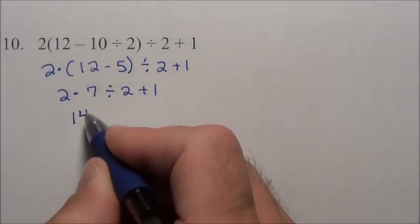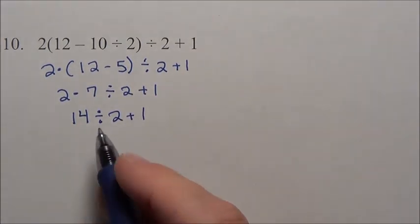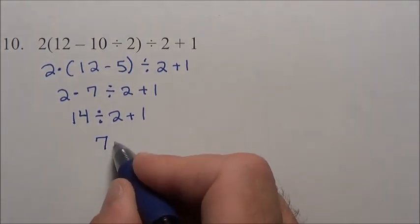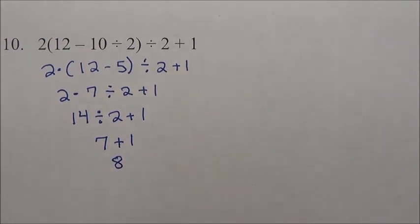2 times 7, 14 divided by 2 plus 1. Now we do the division. 14 divided by 2 is 7. Plus the 1 gives us a final answer of 8 for problem 10.